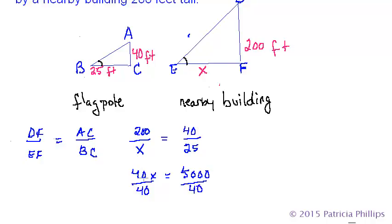So what we're going to do is isolate the X by dividing both sides by 40. 40 divided by 40 is 1, that's going to cancel out. And X is going to equal 125 feet.